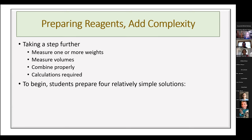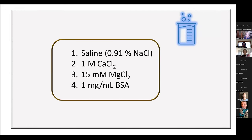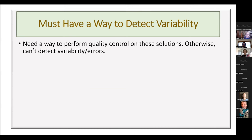Now we get to making reagents, which adds complexity. Students have to weigh something, measure volumes, combine them, and do calculations. They make four simple reagents: saline, calcium chloride, magnesium chloride, and 1 mg/mL BSA. We need a way to detect variability — basically a quality control procedure — and we use conductivity measurements. One student calibrates the conductivity meter, then all students measure the conductivity of their solutions one after another with that same meter.